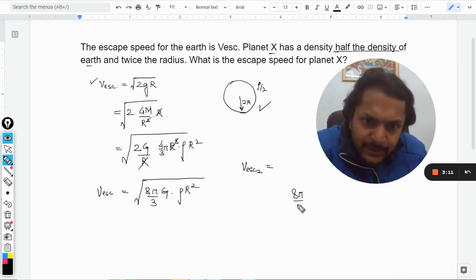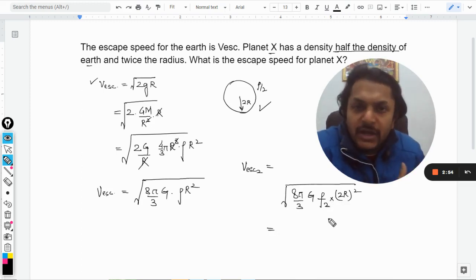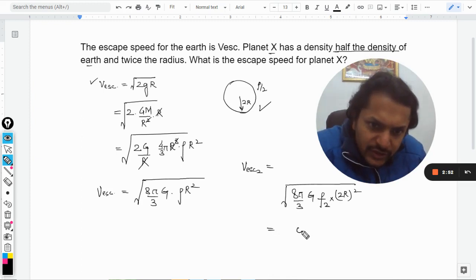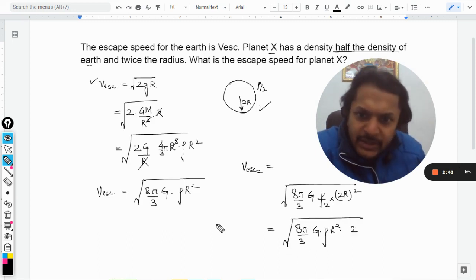They will be 8 pi by 3 into g. Density is half but the radius is double, so it will be 2r square. So keeping everything else constant what we have. This will be 4 and this will be 2. There will be root 2 is coming out to be a new factor here. So it will be 8 pi by 3 g rho r square and root 2 is another thing that is coming here.